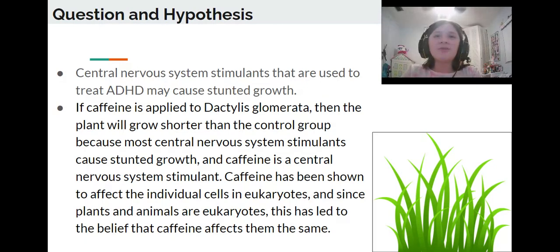Caffeine has been shown to affect the individual cells in eukaryotes, and since plants and animals are eukaryotes, this has led to the belief that caffeine affects them the same.